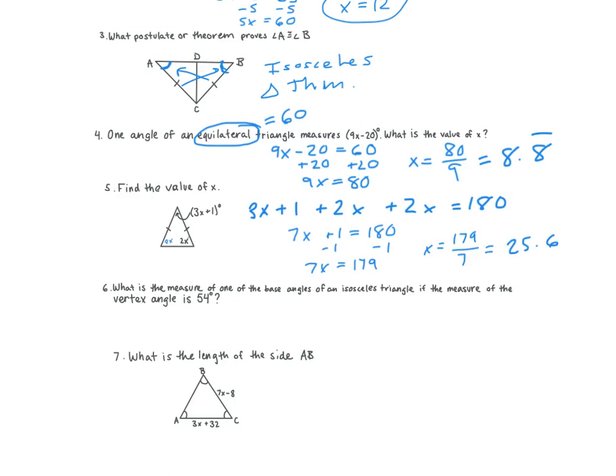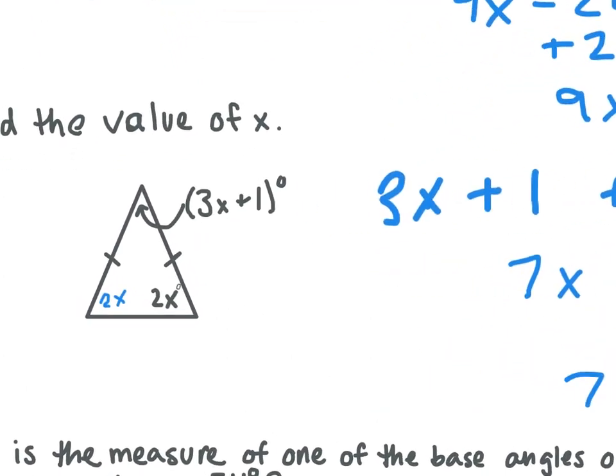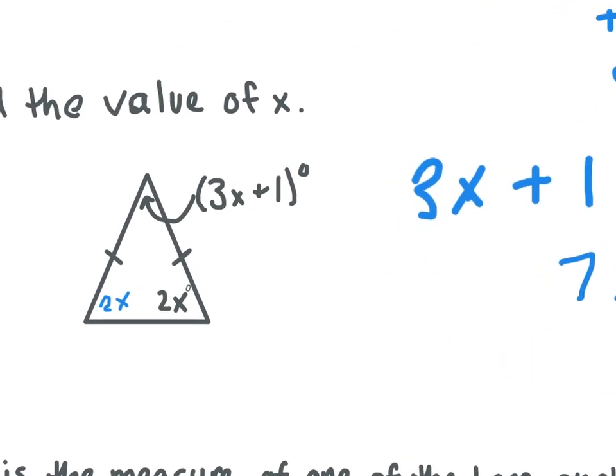For the other angle of the triangle, for the other side, why is it 2X? Remember, the angles that are opposite the congruent sides are congruent. So that's why this angle here is 2X and it's not 3X plus 1.